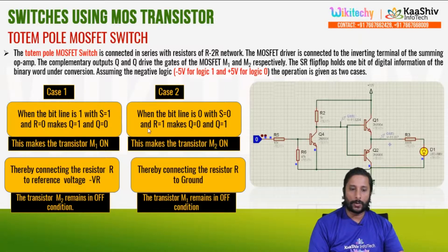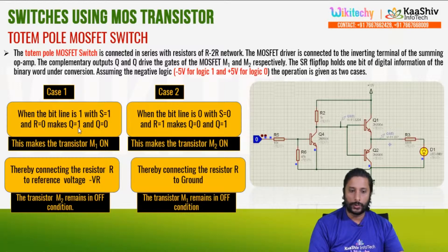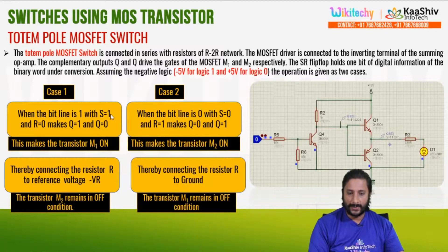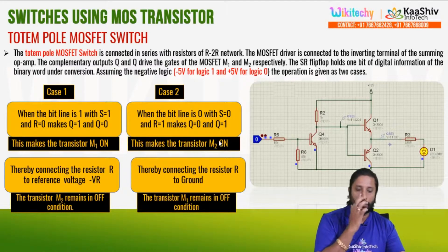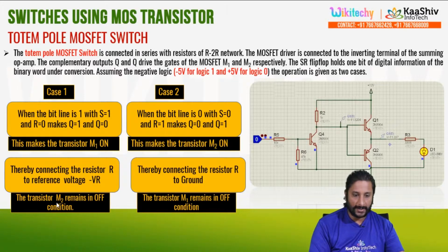In case 1, the bit line is 1. With bit line equal to 1, S1, R1, Q1, Q0: M1 is on, S1 is on, R1 is on, Q equals 0 and Q1 is on. Transistor M2 remains in the off condition, connecting resistor R to reference voltage Vr. R is ground.